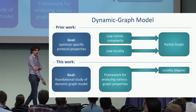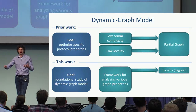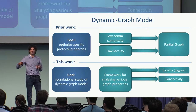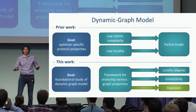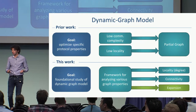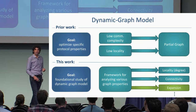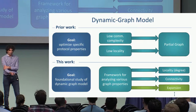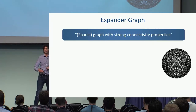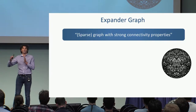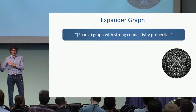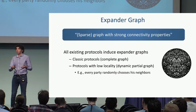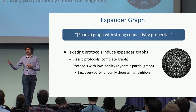For example, locality: since we have low locality, we know we can overcome the connectivity lower bound. A very natural next step is to see whether we actually need expansion in the protocol. This framework can be used to analyze many other graph properties. So what's an expander? Informally speaking, it's a potentially sparse graph with very strong connectivity properties. All of the protocols we know from the literature actually induce a communication graph which is an expander.